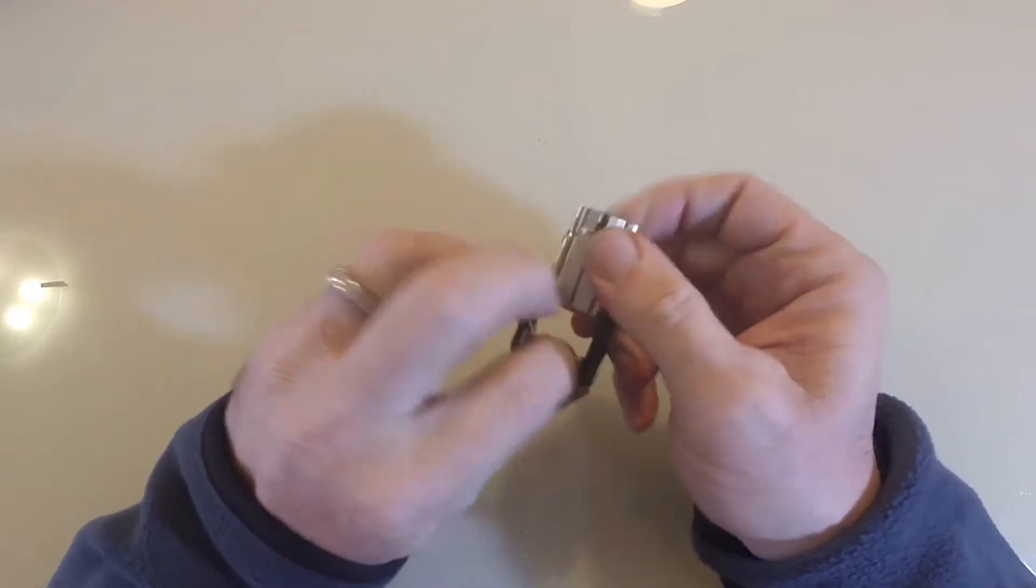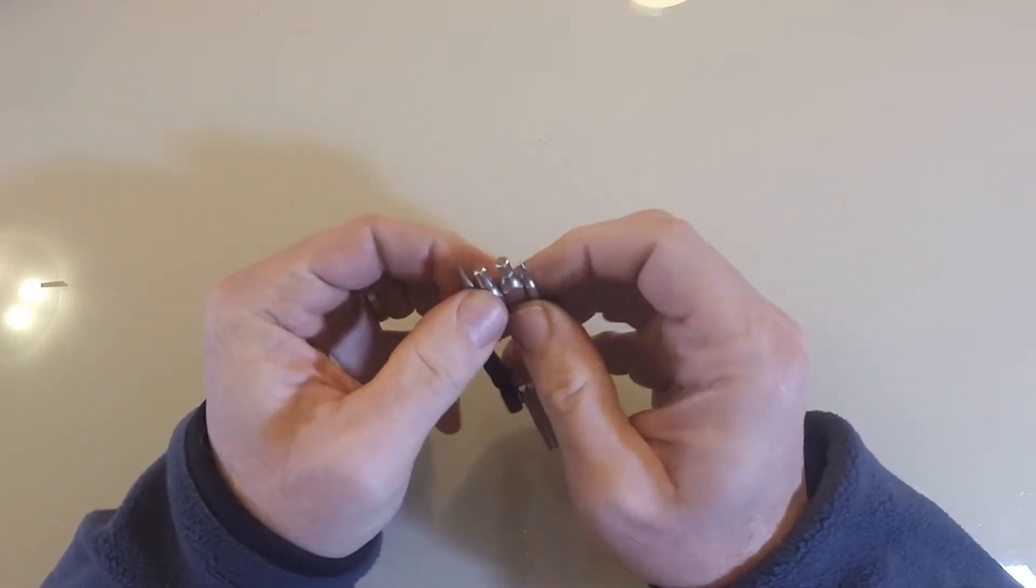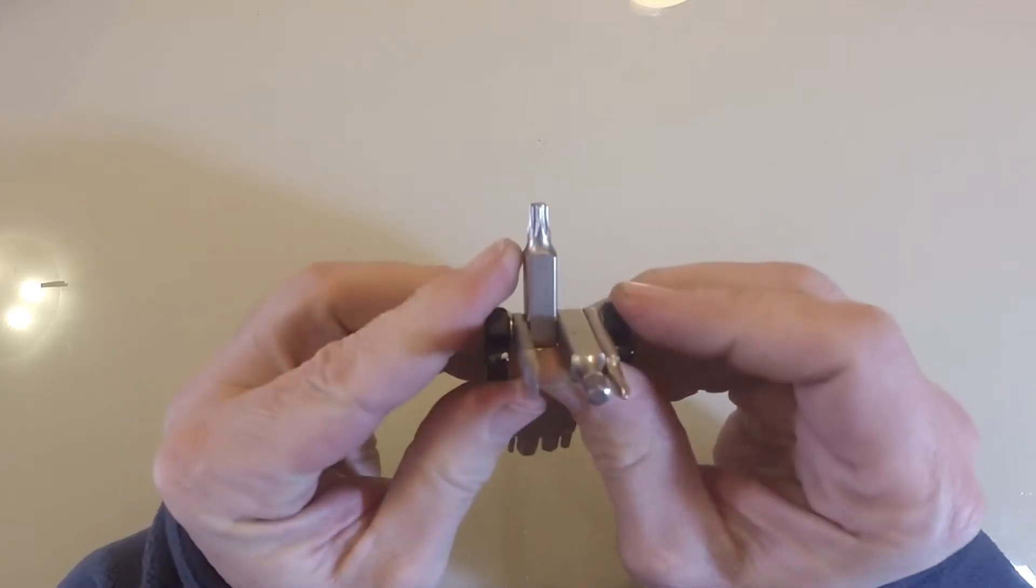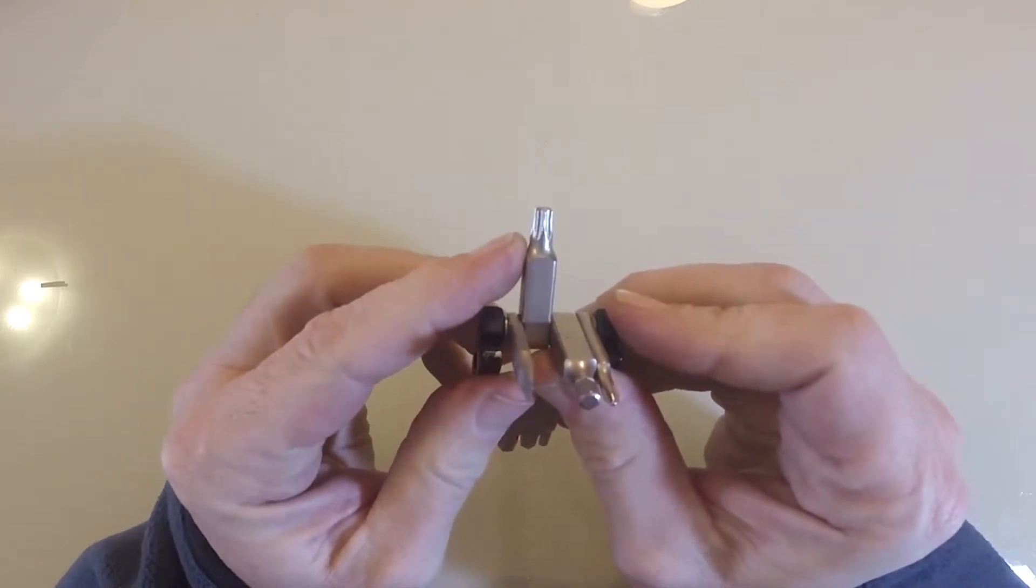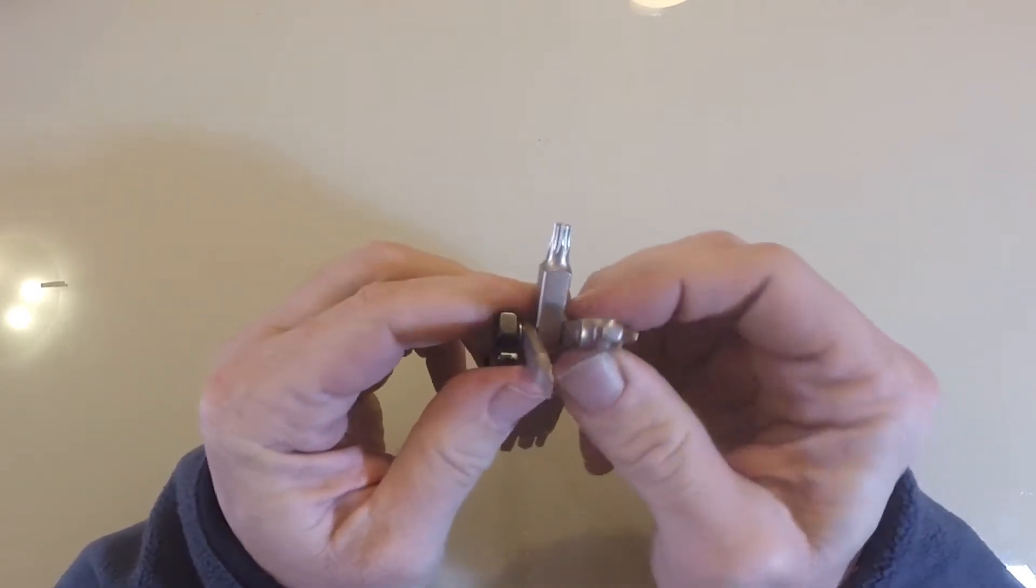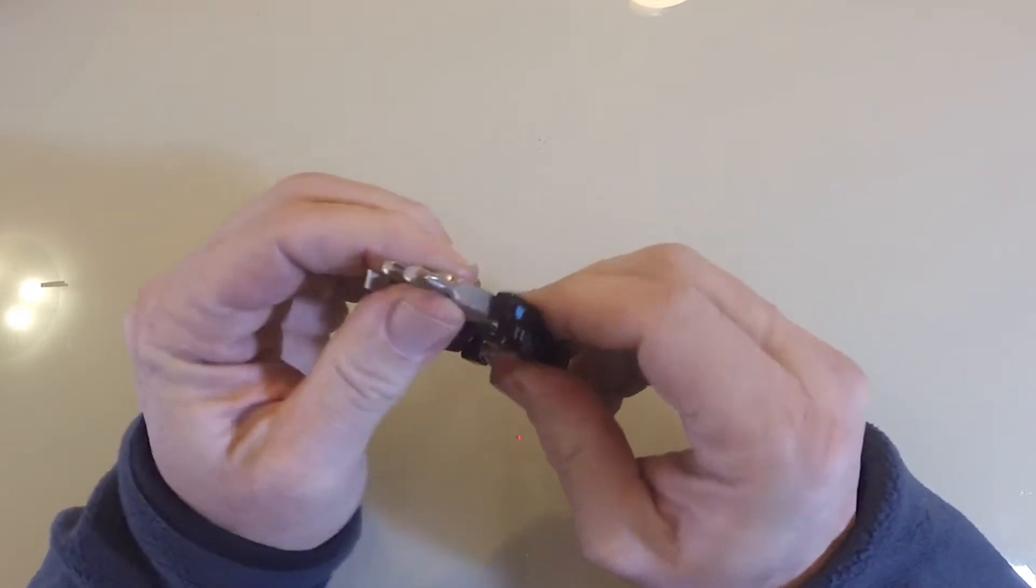And we have the T25 Torx. This is for a lot of things like disc brakes, especially rotor bolts, stuff like that.